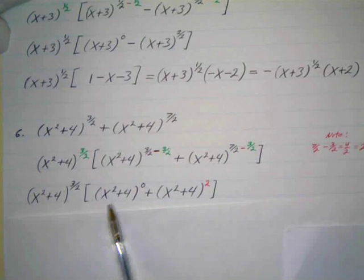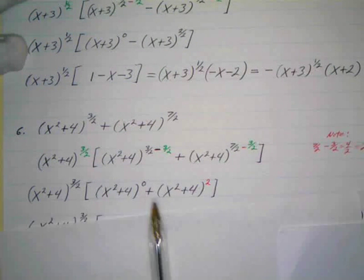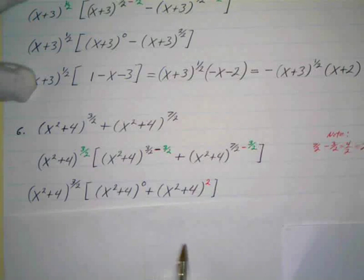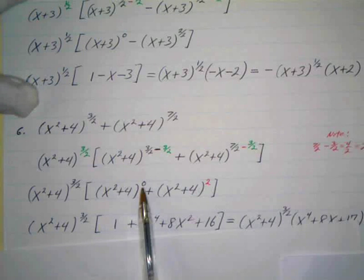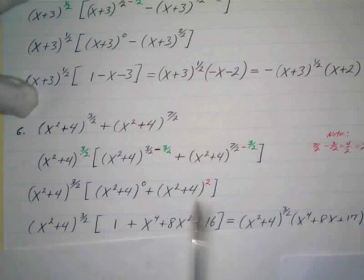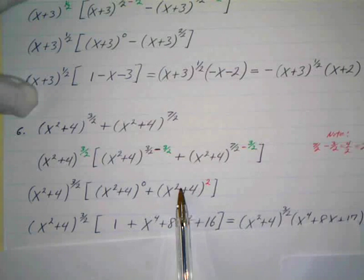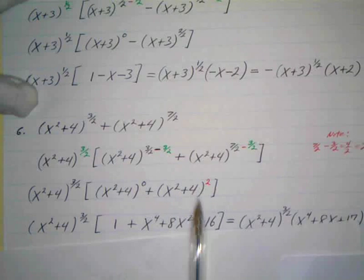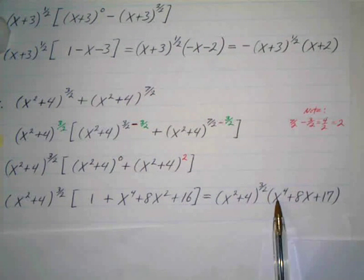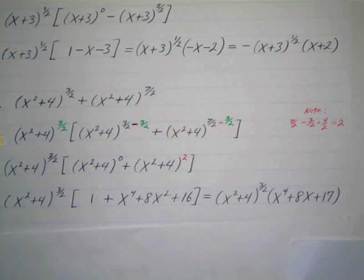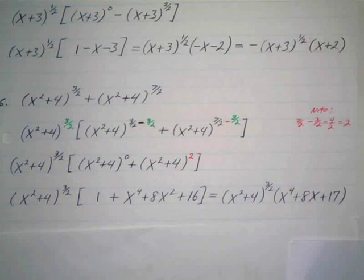This ends up being x squared plus four to the zero power — which is just one — and x squared plus four squared. Anything to the zero power is one. If I multiply out using binomial multiplication, I get a trinomial: x to the fourth, twice the product, and then the last term squared. I can add one to sixteen and get seventeen. Final answer: x squared plus four to the three-halves, times x to the fourth plus eight x plus seventeen.